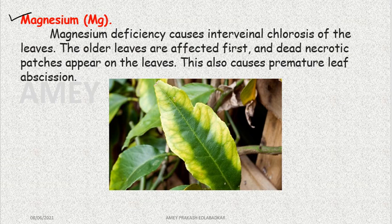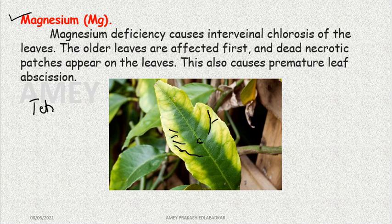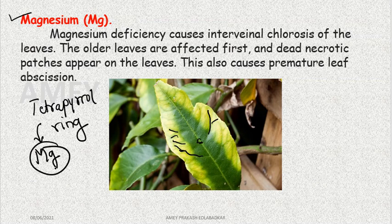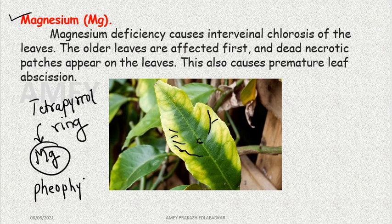Another important type of element and its deficiency is related to magnesium. Magnesium deficiency causes interveinal chlorosis. You can see yellowing increasing between the veins while the center remains green. Chlorophyll has a tetrapyrrole ring and a phytol tail — in this tetrapyrrole ring, magnesium is at the center. Without magnesium, chlorophyll will not form, and this colorless chlorophyll is termed pheophytin.